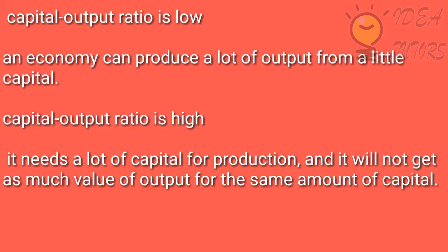If the capital output ratio is low, an economy can produce a lot of output from a little capital. If the capital output ratio is high, then it needs a lot of capital for production, and it will not get as much value of output for the same amount of capital.